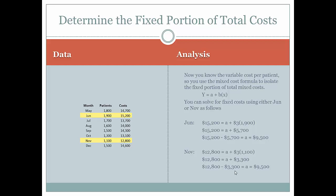Now we use the mixed cost formula to isolate the fixed portion of total mixed costs. Using June: total mixed costs of $15,200 equal fixed costs plus $3 times 1,900 patients, which is $15,200 equals fixed costs plus $5,700. To isolate fixed costs, subtract the variable portion from total mixed costs: $15,200 − $5,700 = $9,500. We can verify using November and get the same total fixed costs of $9,500.